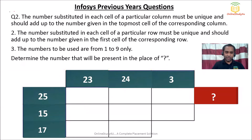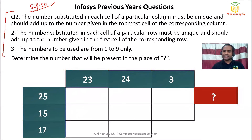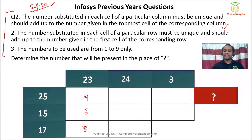Question number 2 is also a question from Infosys — the examination happened in September 2020. The rule is: the number substituted in each cell of a particular column must be unique and should add up to the number given in the topmost cell of that column. For example, if the column total is 23, you could fill 9, 6, 8 — because 9 plus 6 is 15, and 15 plus 8 is 23. So whatever you put in the column, it should add up to give you 23.